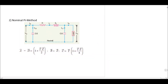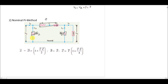For the pi model, the capacitance is divided into two parts: one placed at the sending end and one at the receiving end of the transmission line. The impedance is represented by a single entity Z. We have Y/2 at each end.